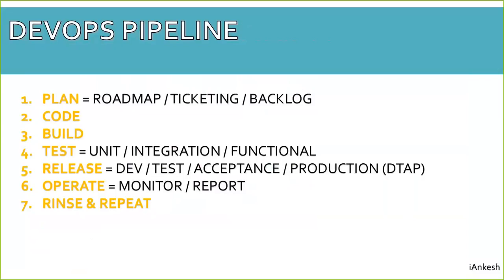Coming to the DevOps pipeline — how this pipeline is formed. It consists of several steps. The first step is to plan, meaning to create tickets or a roadmap to go with the deployment. The second is to create code, which developers are going to write. The third is to build it into packages.